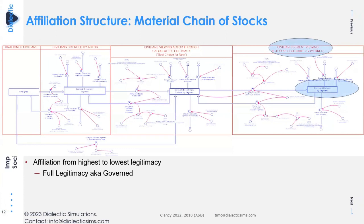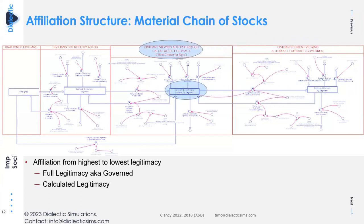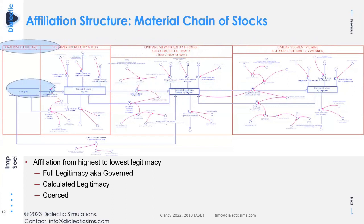The affiliation structure is a simple material chain. In the full state, after legitimacy is established, people may move to calculated legitimacy — best choice for now — then to coerced, then to unaligned. If unaligned, they look at relative momentum and may choose to re-enter with another actor. You can make this material chain applicable to any model. From it, you determine how much support the population gives: a fully governed individual may pay more taxes and be willing to fight, whereas someone coerced is more resistive and requires more influence to control.